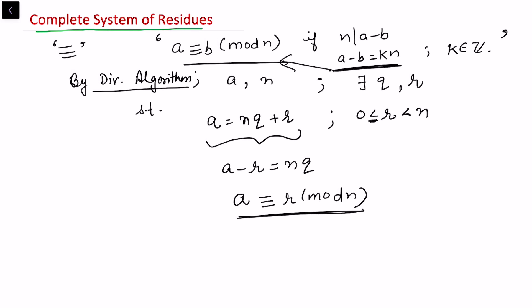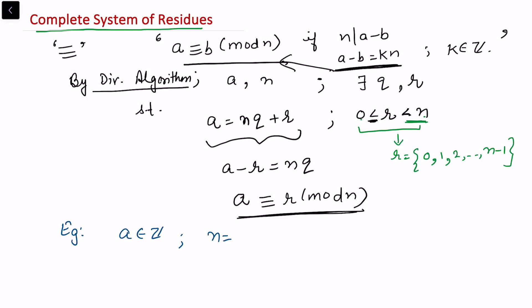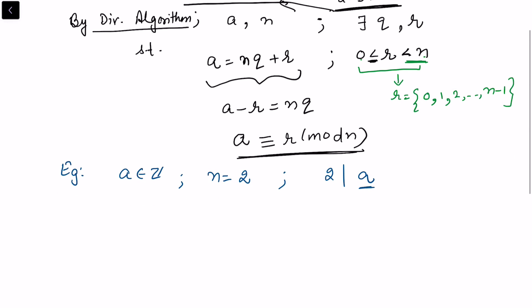From the division algorithm we can see that r lies between 0 and n-1, so the possible choices for r are 0, 1, 2, up to n minus 1, because r is strictly less than n. Now let's take some examples. Fix n equal to 2, so we want to consider 2 dividing a. Depending on whether a is even or odd, a is either congruent to 0 or congruent to 1 modulo 2.